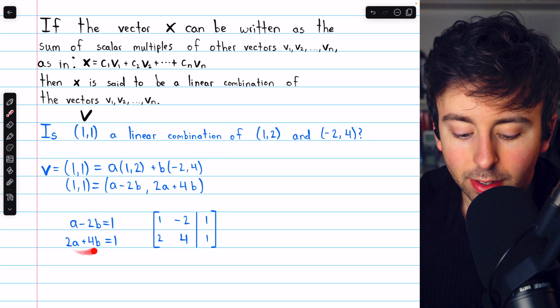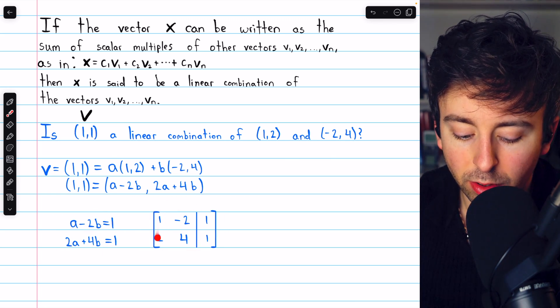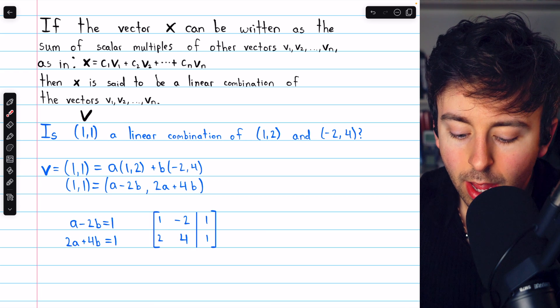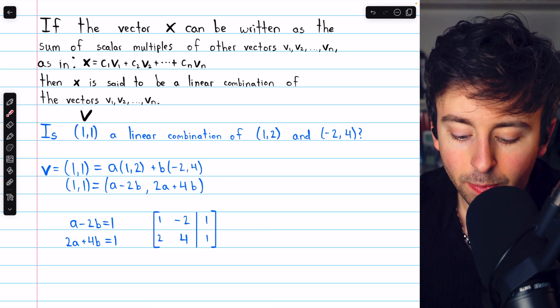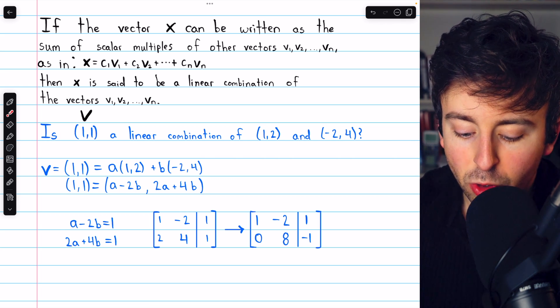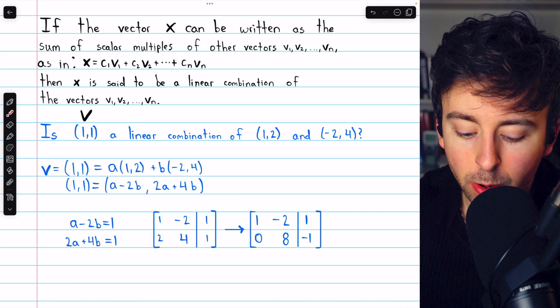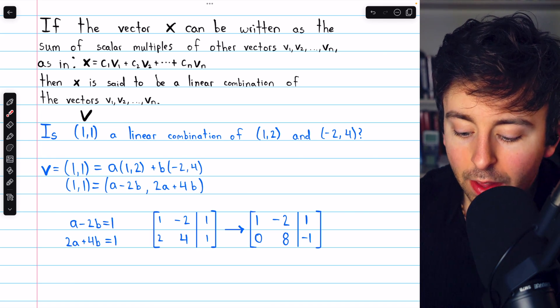Now, we can represent this system of equations with the augmented matrix. Here's the coefficients of a, the coefficients of b, and the constants on the right side. Then we can perform Gauss elimination. This is quick and easy. We can just subtract two copies of row 1 from row 2 to introduce a 0 below that leading 1, and that gets us here.